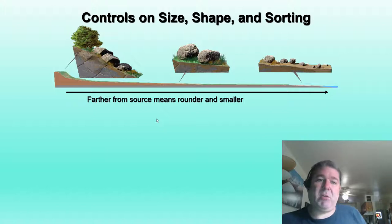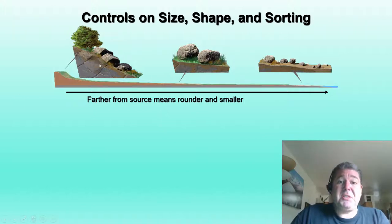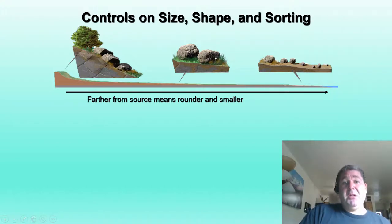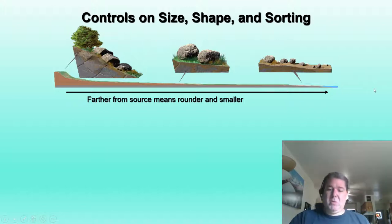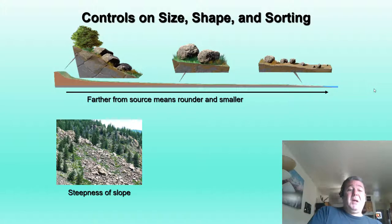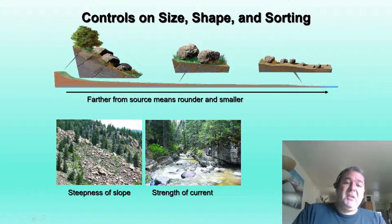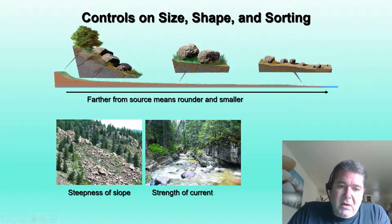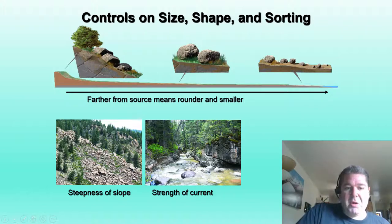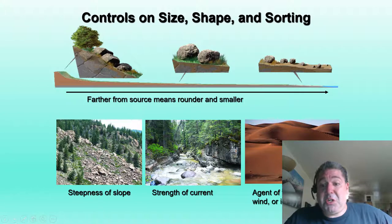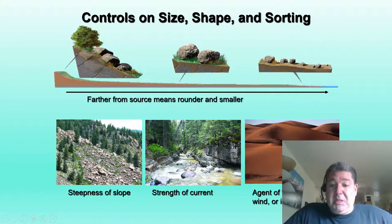In general, farther from the source means rounder and smaller grains. As particles break apart, roll, and tumble, they become smaller and more rounded. But it depends on the environment of deposition — how steep the slope is, the strength of the current. In a steep, high-gradient mountain stream, we see boulders and cobbles; everything else gets flushed down to be deposited in a lower-energy environment. The agent of transportation also matters: water, wind, or ice — ice being the poorest sorter, wind being the best.